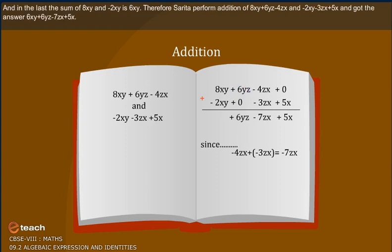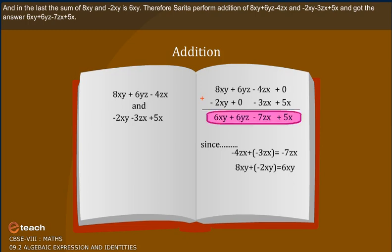In the last, the sum of 8xy and minus 2xy is 6xy. Therefore, Sarita performs addition of 8xy plus 6yz minus 4zx and minus 2xy minus 3zx plus 5x.